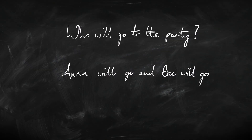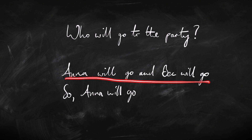Let's look at some examples. Suppose we're interested in who's going to go to the party. We've got the information that Anna will go to the party and Beck will go to the party. We can conclude: Anna will go. So from 'Anna will go' and 'Beck will go' we can conclude 'Anna will go.' That's a super simple example.